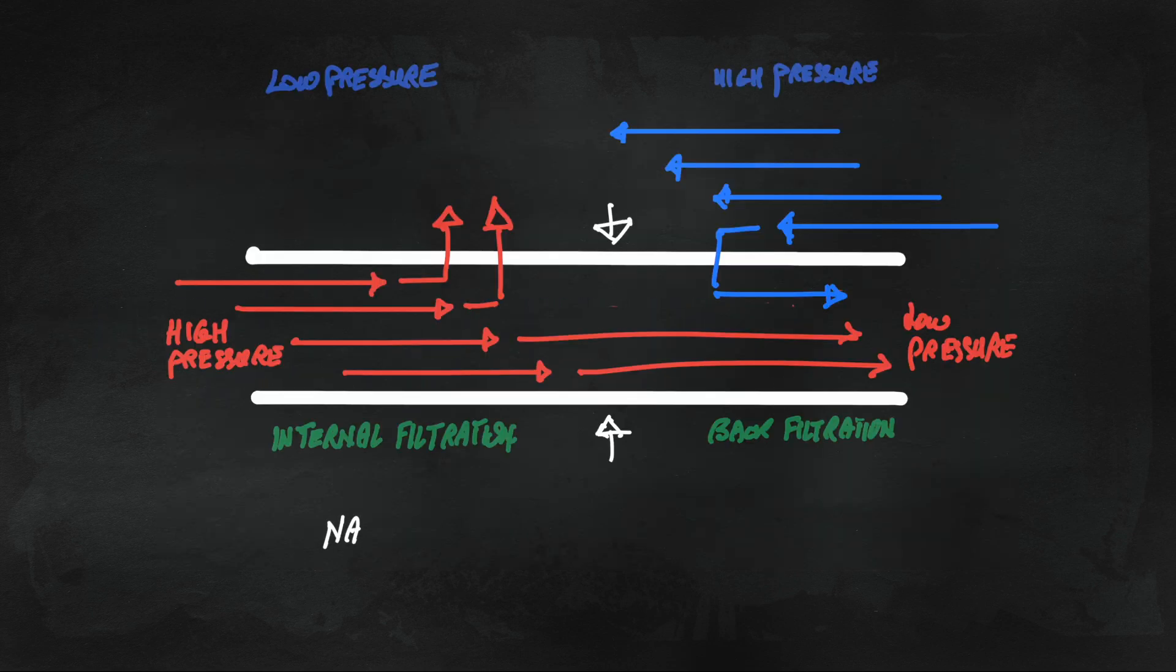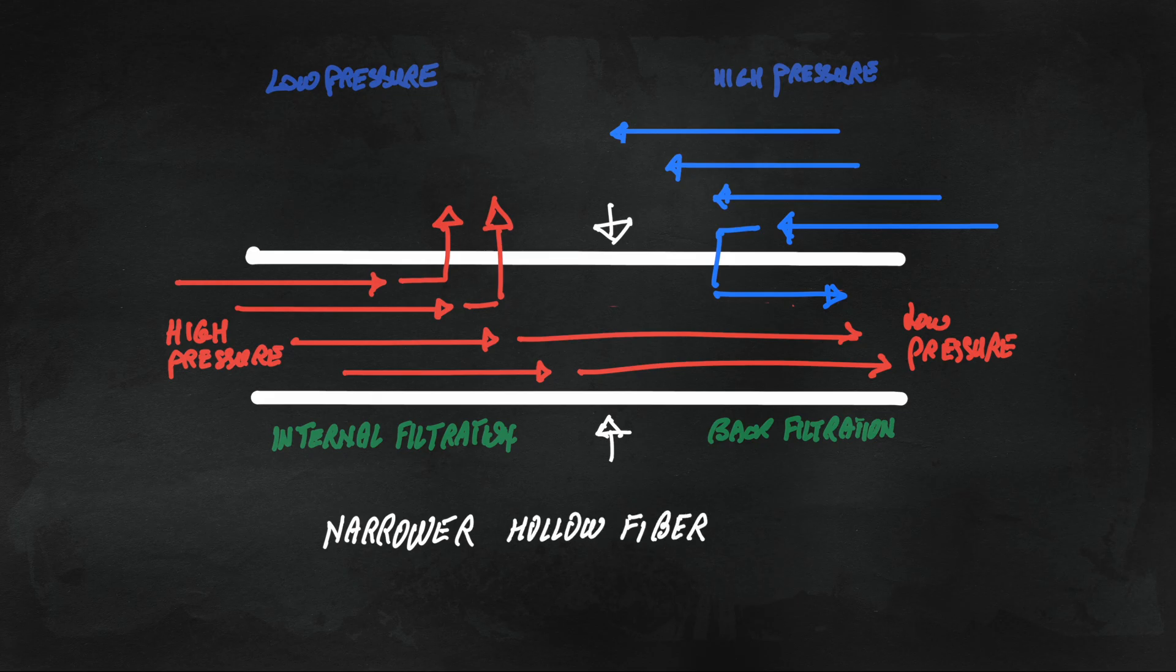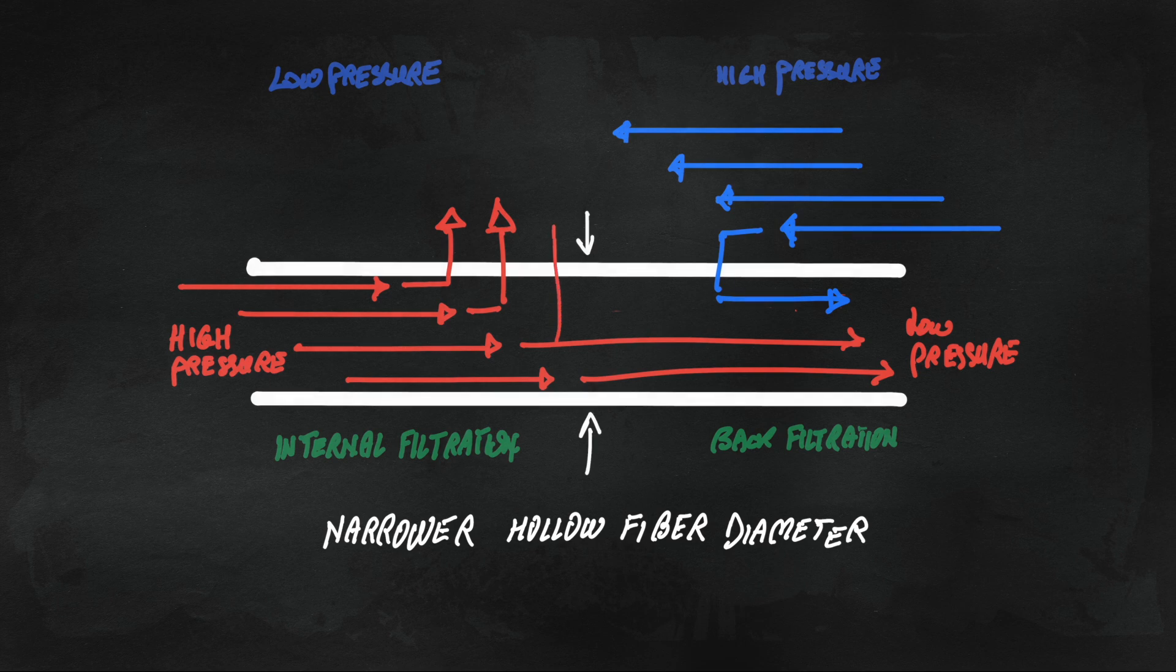The internal filtration back filtration can be enhanced by reducing the hollow fiber diameter where you have higher pressure buildup for the same blood flow rate.